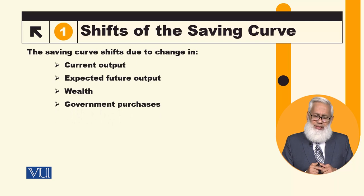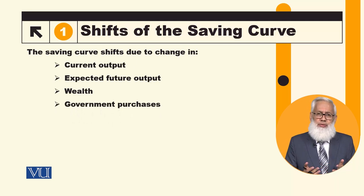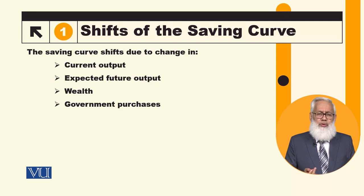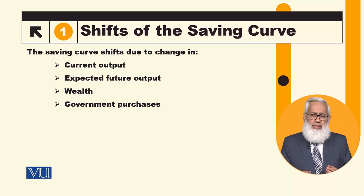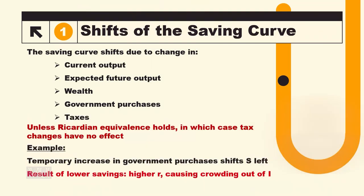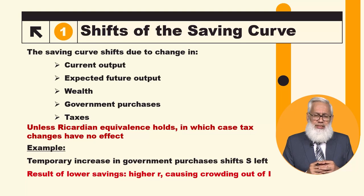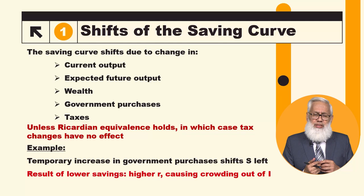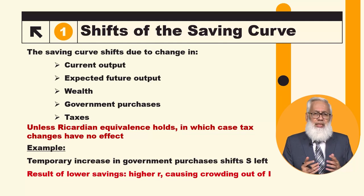Government purchases affect savings. National saving is total output minus desired consumption minus government spending. If taxes increase, savings will increase and the saving curve will shift.